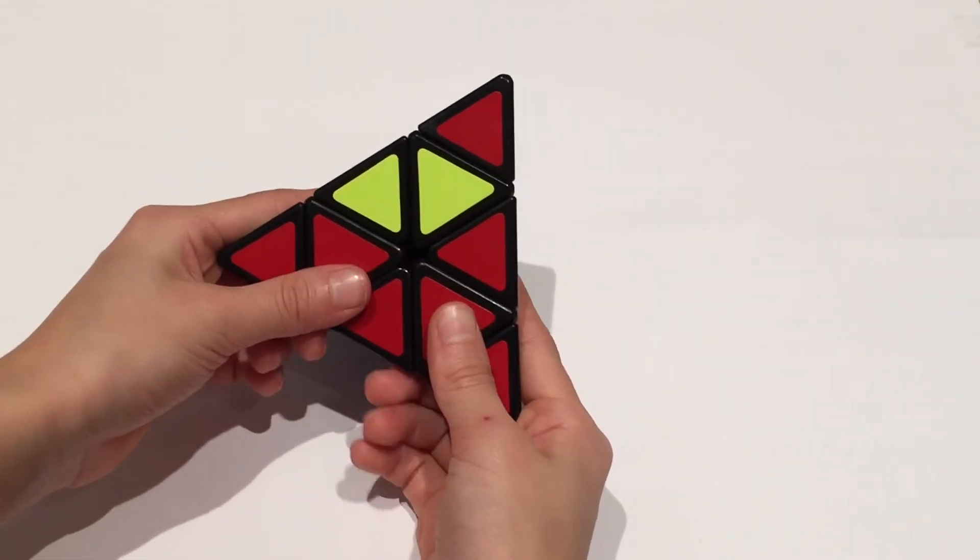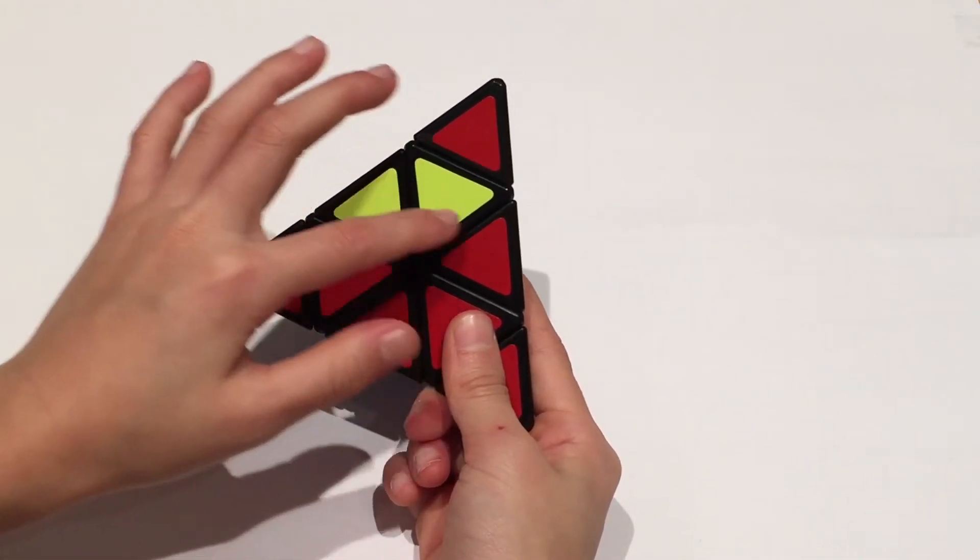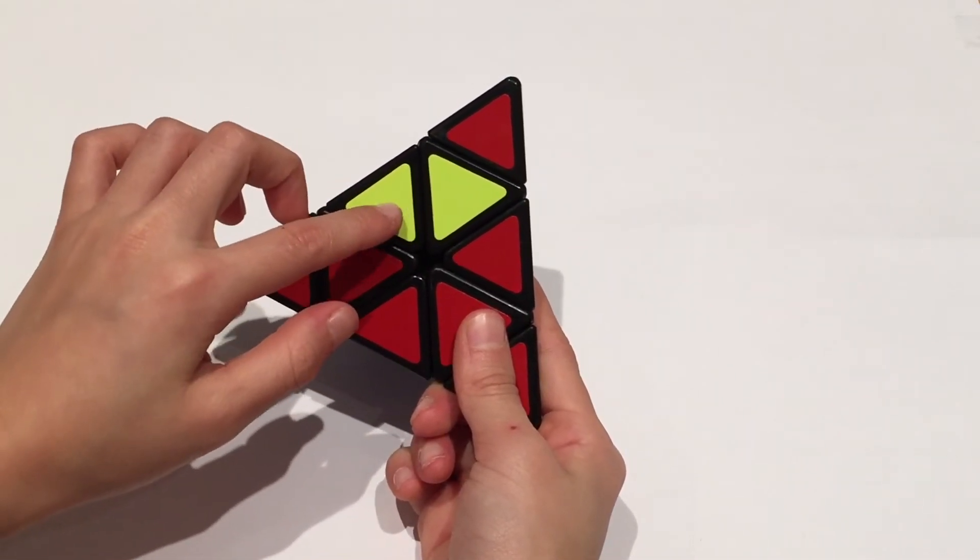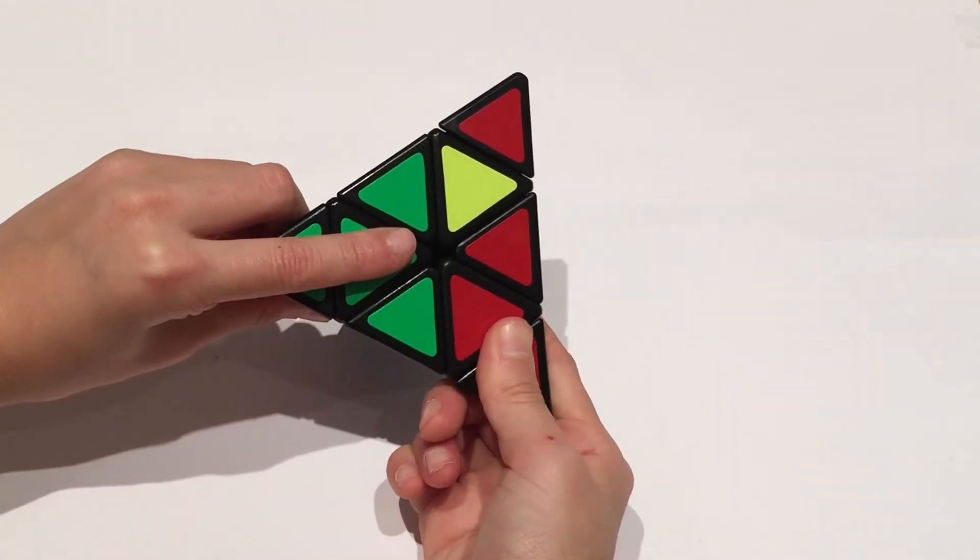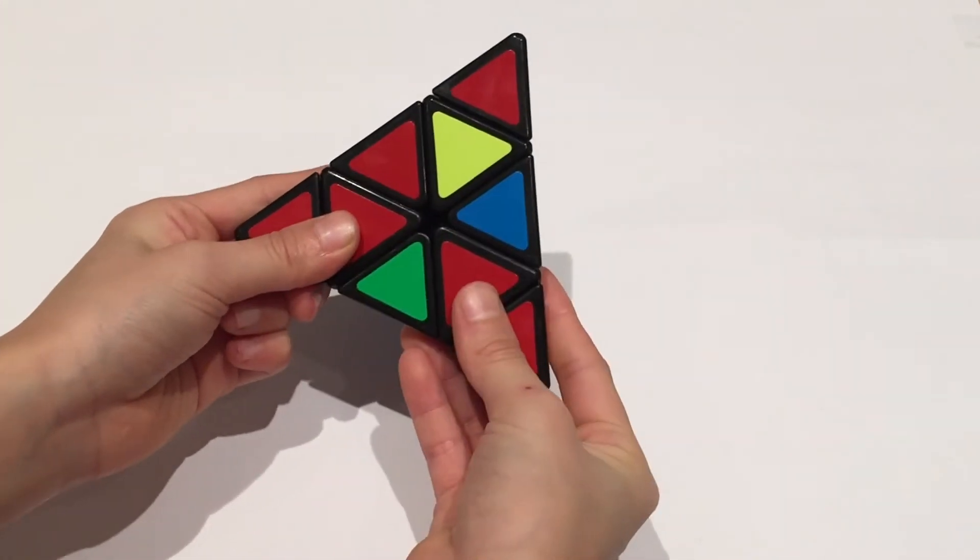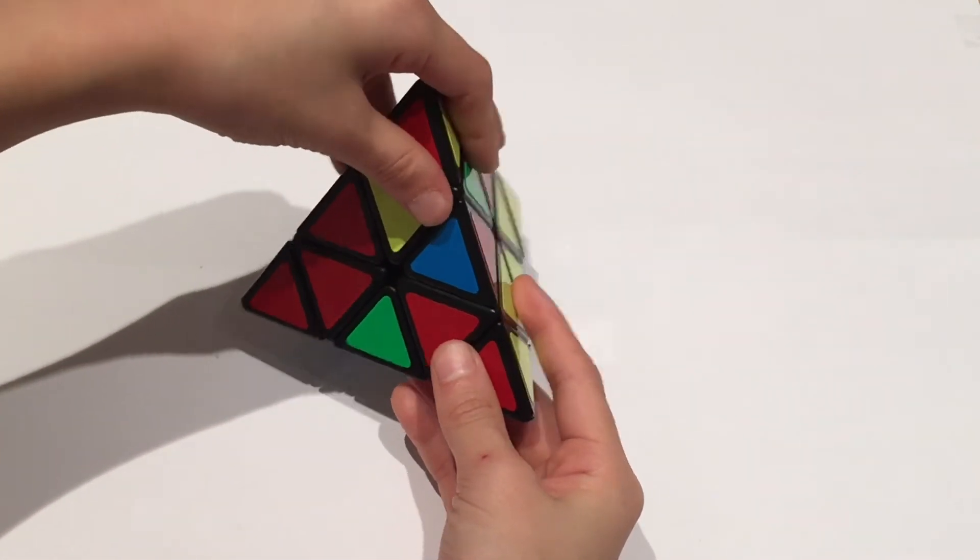And you want to bring whichever sort of clump down where it's not correct. So this case the yellow one is not correct because red does go here. So I'll bring this down and then bring this down and bring this up and bring this up.